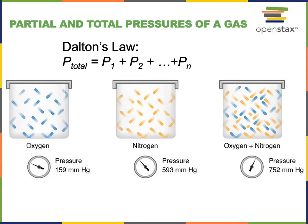Dalton's Law states that the total pressure of a mixture of gases is equal to the sum of the individual partial pressures for each gas. For example, if the total pressure of the atmosphere at sea level is 752 mmHg and the concentration of nitrogen in the air is 79%, the partial pressure of nitrogen is 593 mmHg. You could calculate that by multiplying the total pressure of 752 mmHg by 0.79.